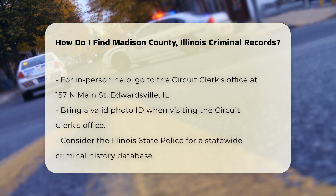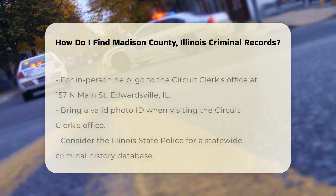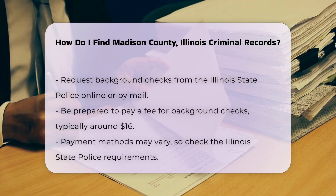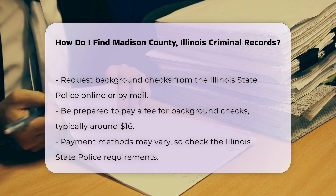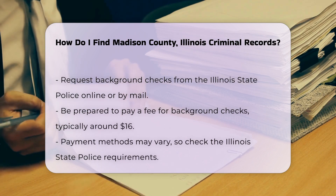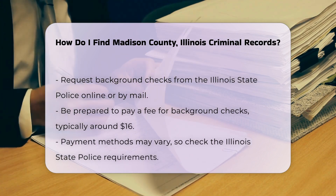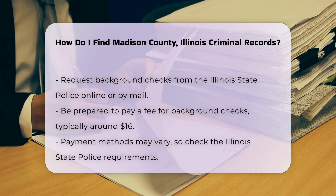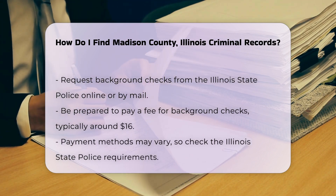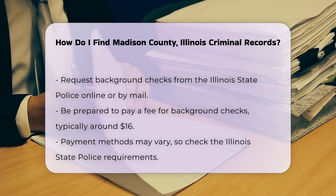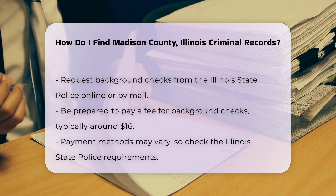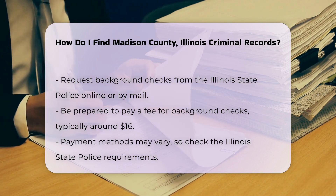For a more comprehensive search, consider the Illinois State Police. They maintain a statewide database of criminal history records — you can request a background check online or by mail. When requesting records, be prepared to pay a fee. The fee for a background check is typically around $16. Payment methods can vary, so check the specific requirements on the Illinois State Police website.